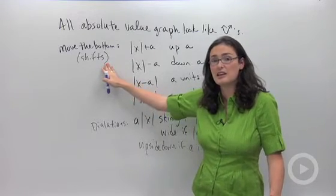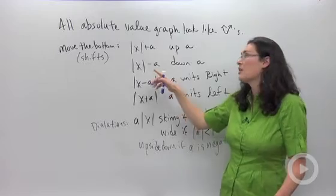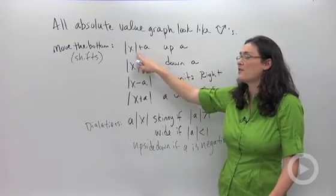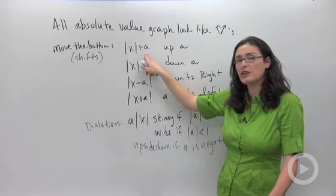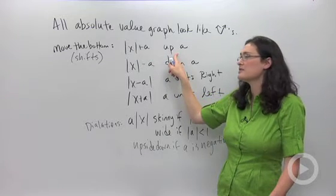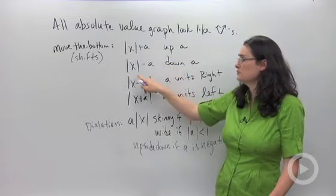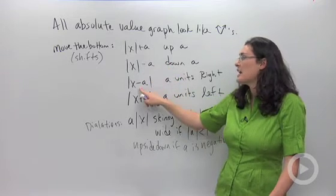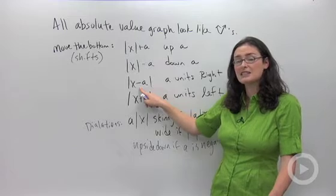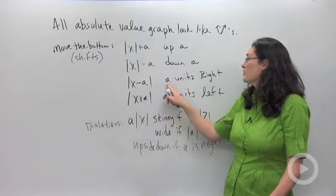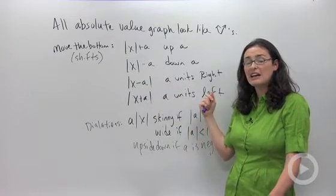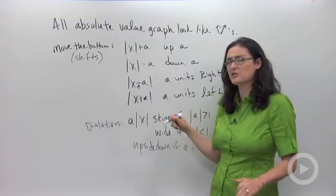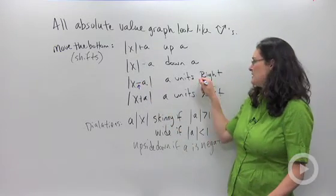Shifting means you take the V and move it either side to side or up and down. If you have an absolute value plus a, where the a is outside the absolute value, you move it up a units along the y-axis. If it's absolute value of x minus a, you move down. If you have a negative a inside the absolute value, you're going to move a units to the right. This is tricky because usually negative values means move to the left.